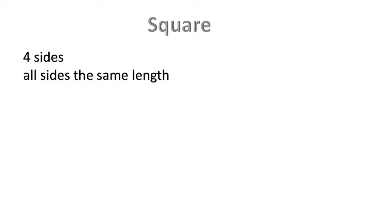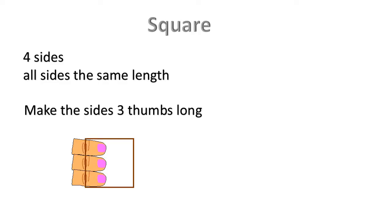A square has four sides all the same length. Make the sides three thumbs long. The four corners are right angles.